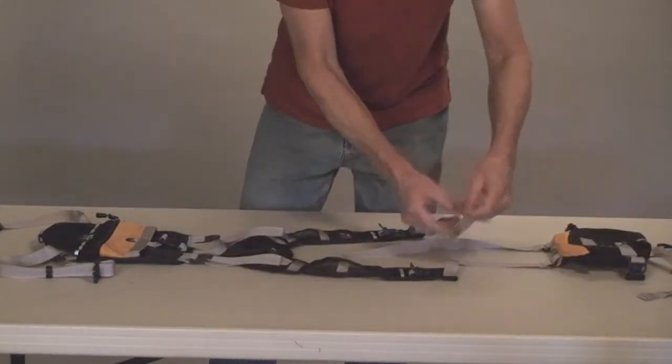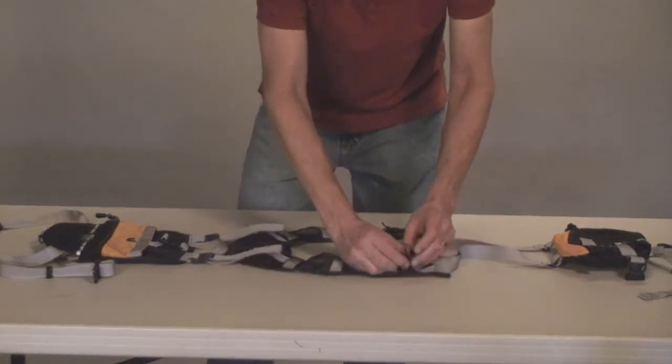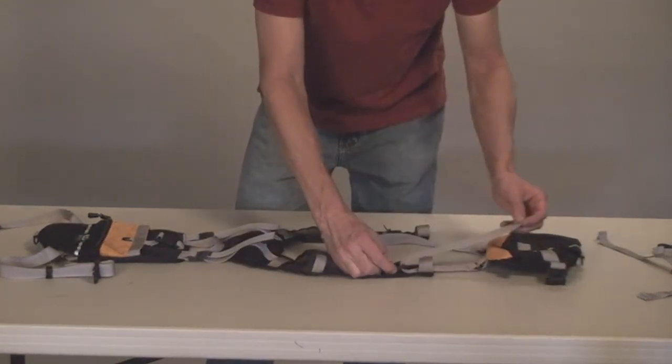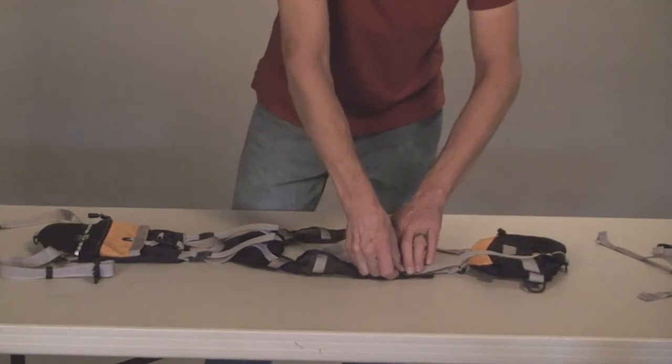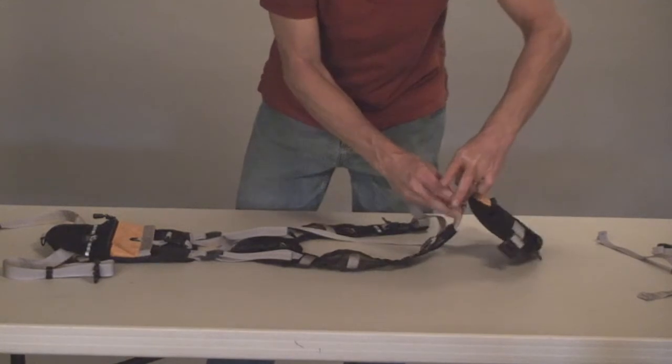Take these straps, pass them through this loop, and up through the bottom of the cam buckle, and then snap the cam buckle closed. Any excess webbing can go through the uni-loop like this, and out the back of the pouch.